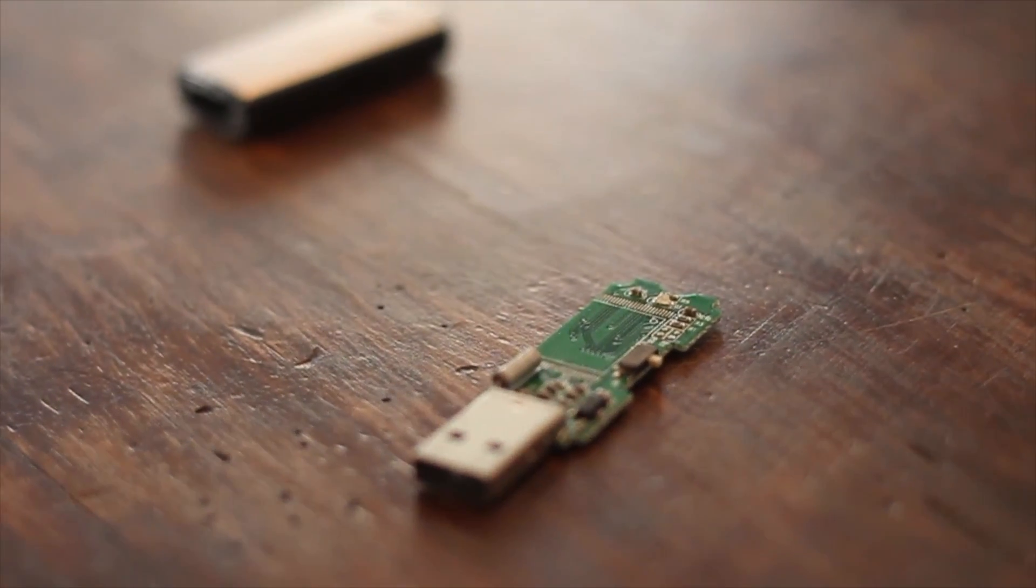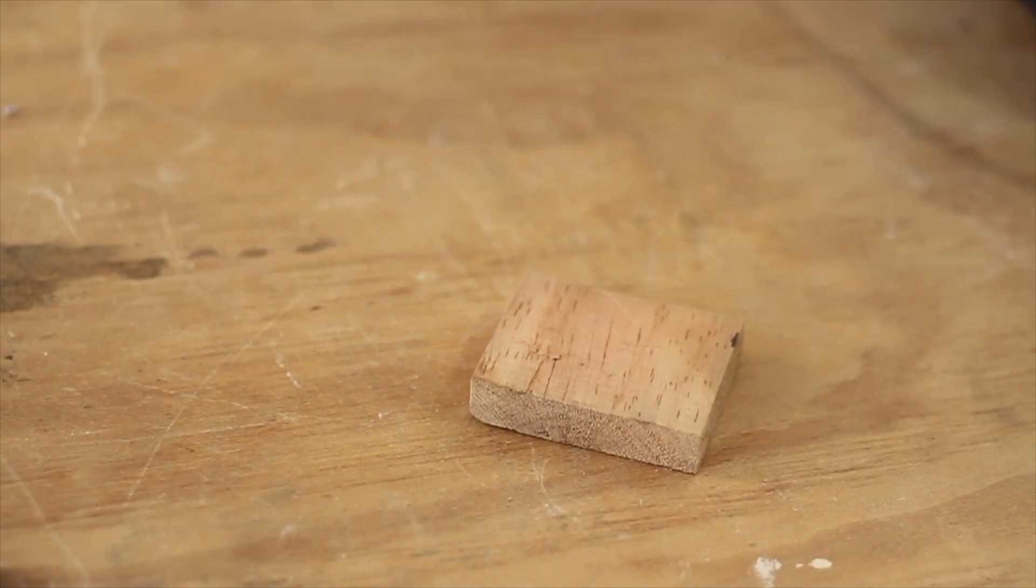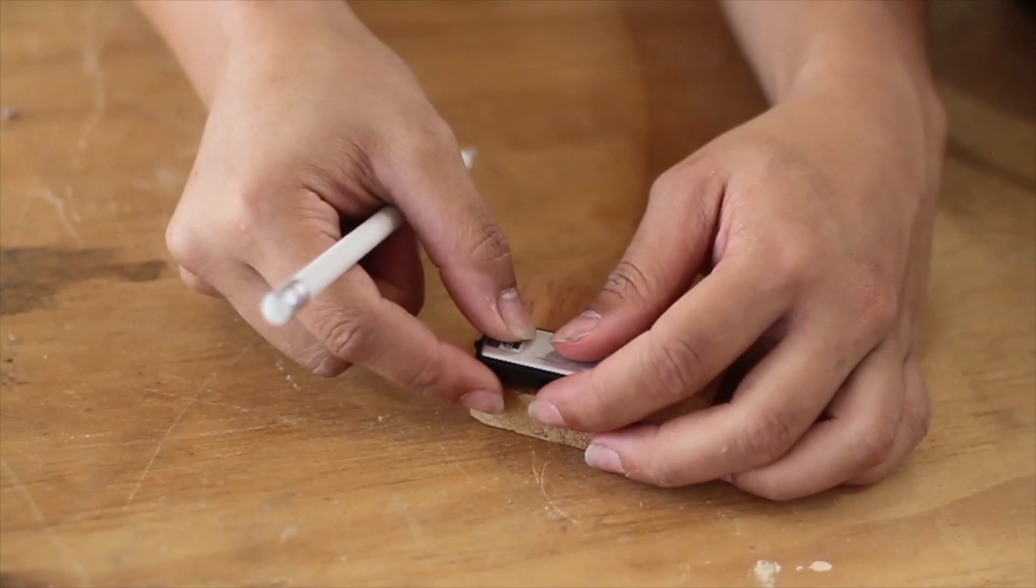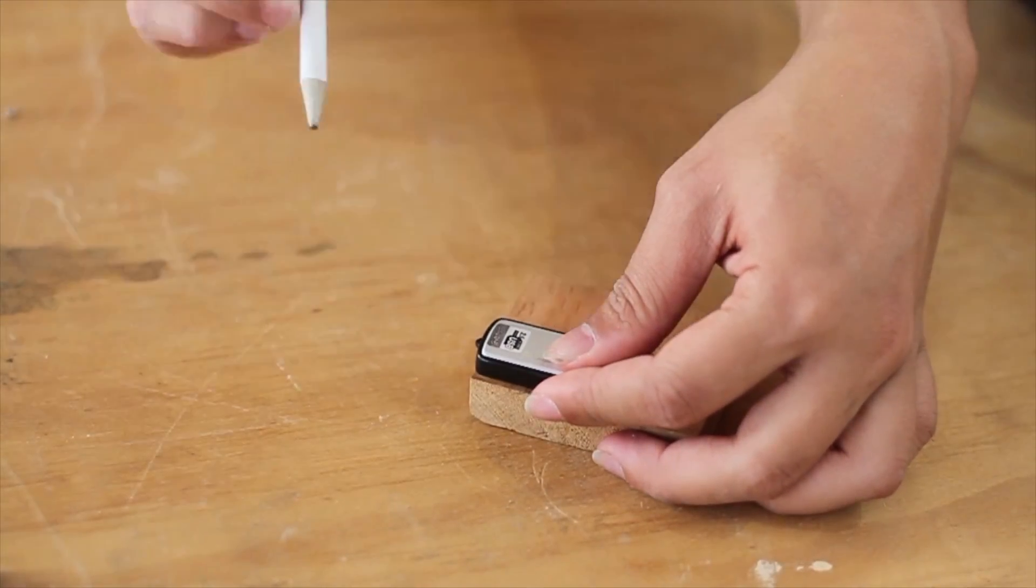Remove the plastic case. Be sure to get the USB that allows it. Trace and cut the block of wood of the same size of the plastic case.